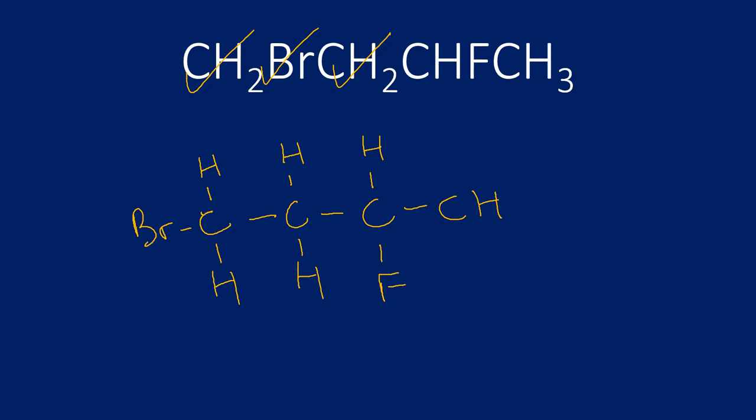But I've made a mistake because if I'm doing a displayed formula, I have to show all the bonds. You must draw all of the bonds. Now if you're thinking, how does he know to put the F down the bottom and the H at the top? It doesn't matter. I could put the F up top and the H down the bottom. They are both correct. The same rule applies with the Br. It really doesn't matter as long as it's on the correct carbon.